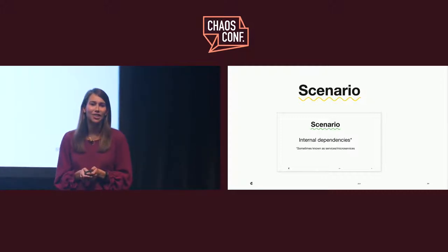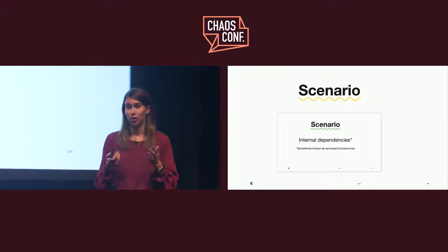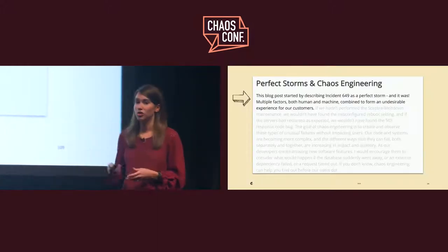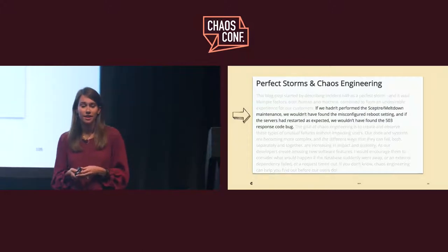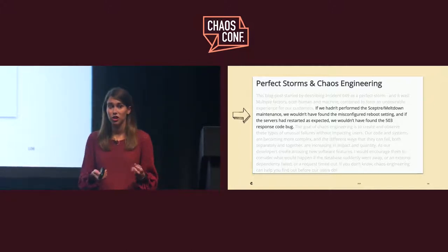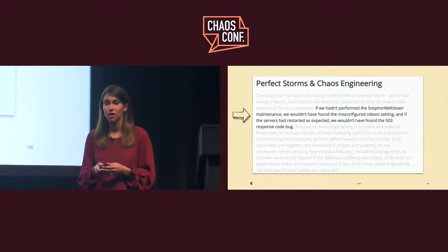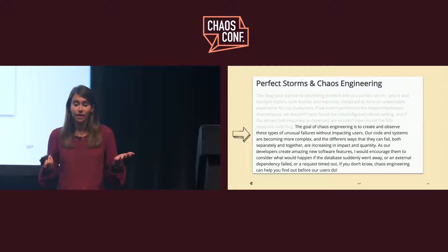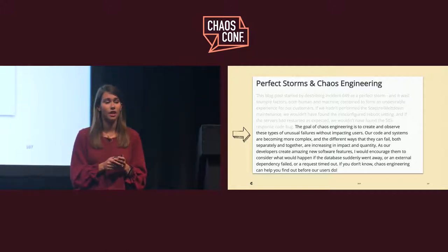A post-mortem game day — recreating incidents — is my last example. This is actually a repeat of the request mapper scenario I shared earlier, where we had an internal dependency that went down and so did our app. We used the term 'perfect storm' to describe this incident because this application had never gone down before. During a routine maintenance, request mapper just didn't come back up — it was misconfigured. And because it was misconfigured, we were able to find that 503 response code issue that we would never have known about otherwise. Chaos engineering is a great approach that allows us to recreate and diagnose incidents and prevent them from ever happening again.